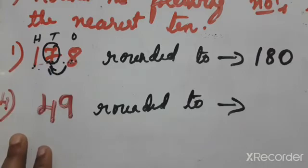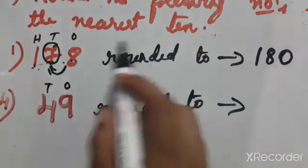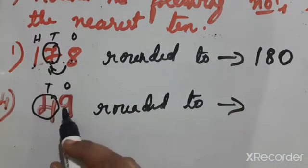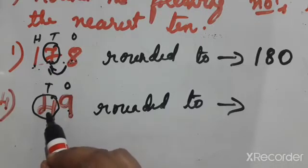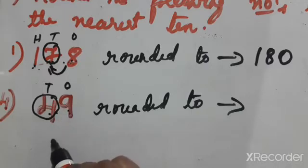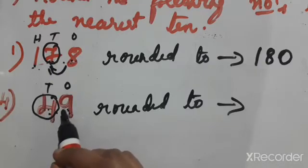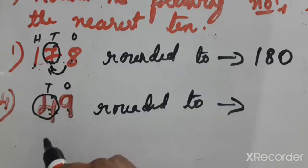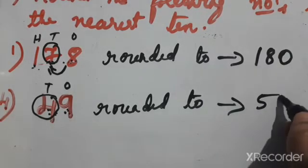Now the fourth problem: 49 rounded to the nearest tens. First step, check the place — we are rounding the tens place, so four is being rounded. Knock the door and ask: do you have five rupees or more? Nine is a rich person. Nine will help four. Four knocked the door — the neighbor is nine, a rich person. Nine helped four, so four will become five. And once the door is knocked, that person — nine — will become zero.